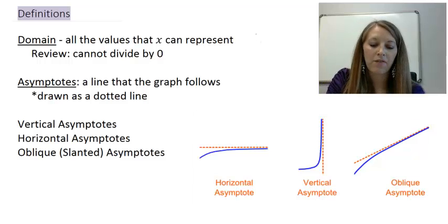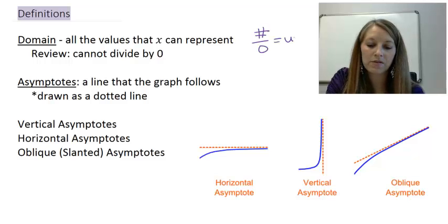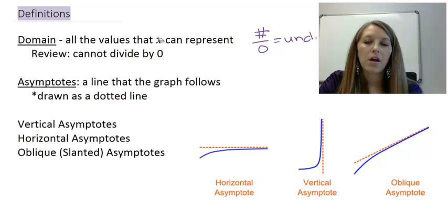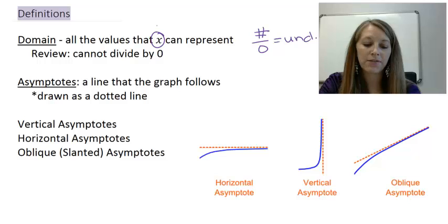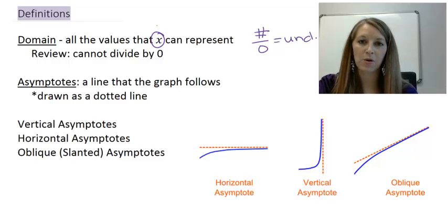If you remember back, if you have a fraction with zero in the denominator, that gives you something undefined. So if that happens for a specific x-value, then our domain is not defined for that specific x-value. Now, when that happens, that gives us an asymptote.